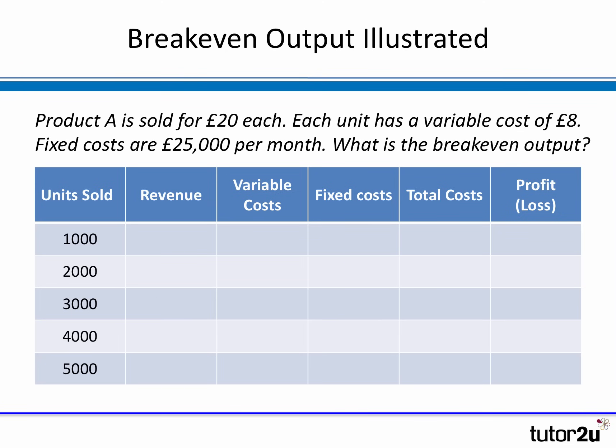I'll put a brief illustration of the break-even output calculation on the screen and build it up so that we can then introduce this concept called the margin of safety. In this example it's a very simple one: there's one product, Product A. It is sold for £20 per unit, each unit has a variable cost of £8, and this business has fixed costs of £25,000 per month. Given that information you can work out the break-even output.